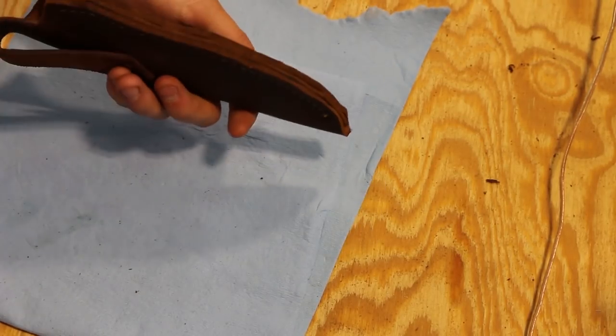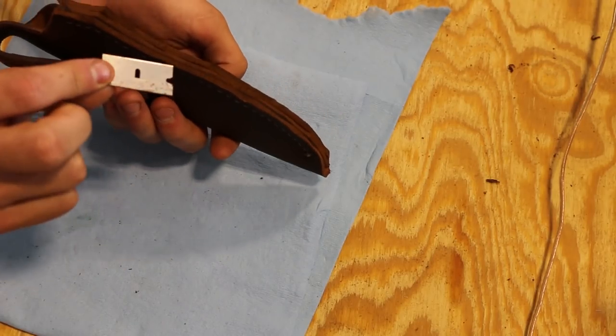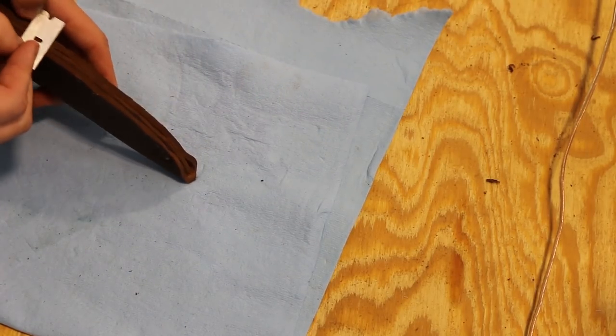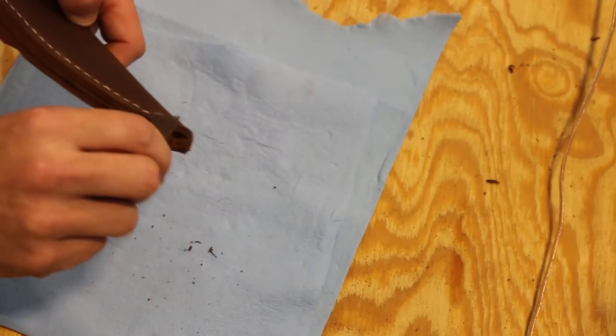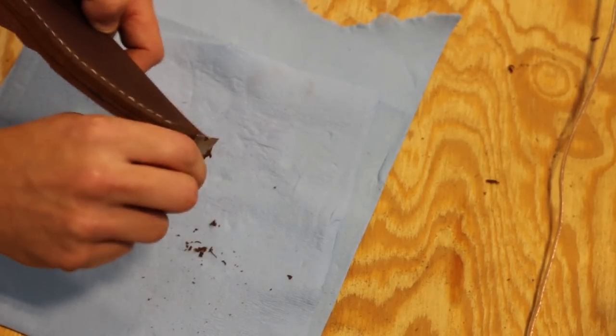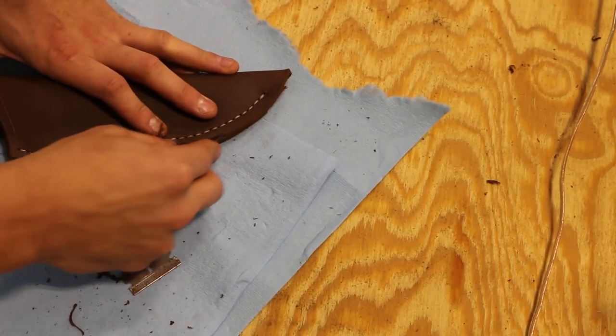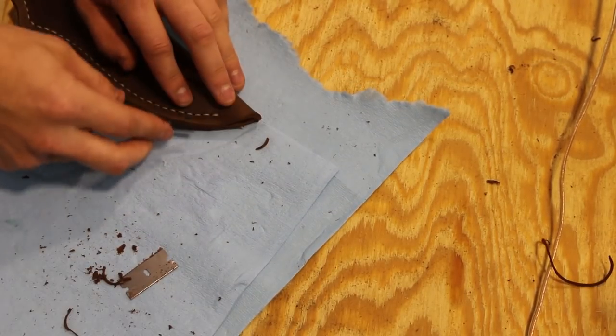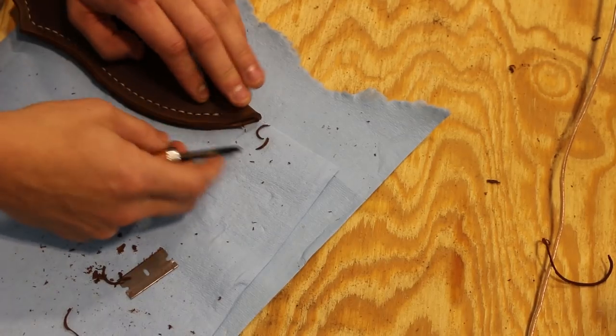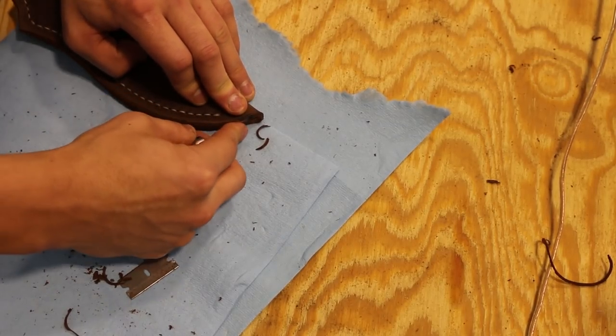Now that it's all stitched up, I'll be evening the three layers with a razor. And now I'll do the same thing that I did before. I'll finish the edges with the edge beveler and follow that up with a water burnishing.